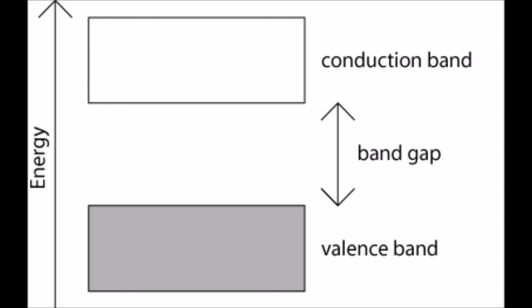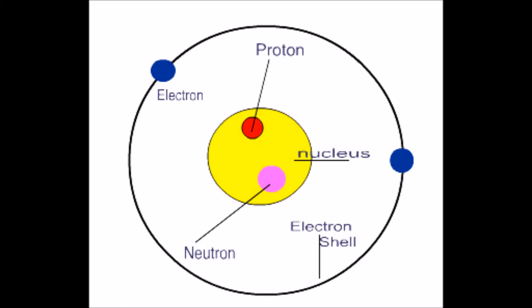Electrons in the valence band have a lower energy level than those in the conduction band. Looking at the diagram, the conduction energy band is at the top of the graph, whereas the valence energy band is at the lower margin. So the valence energy band contains lower energy electrons, while the conduction energy band contains higher energy electrons.